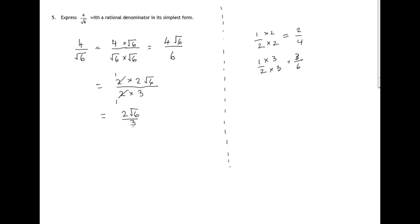And that's got a rational denominator. The bottom number here has no square root in it. So there's your answer, 2 root 6 over 3.